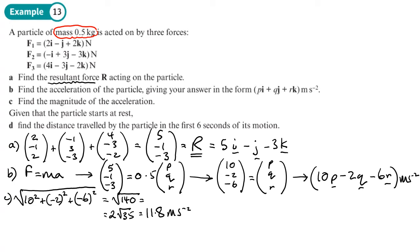And then finally on part d, find the distance traveled by the particle in the first six seconds. So anytime you're asked to work out distance, time, velocity, you're going to be using SUVAT. Now just before that part it says given that the particle starts at rest, okay, so that means that u is zero.